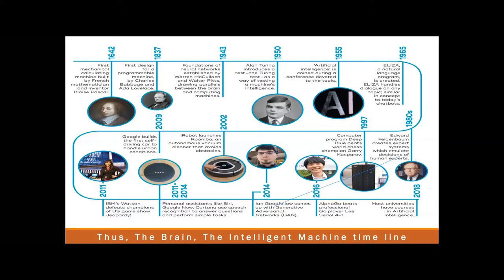In 1943, the foundation of neural networks was established by Warren and Pitts, drawing parallels between the brain and computing machines. And 1950 is the real breakthrough where Alan Turing came out with what he called the Turing test.